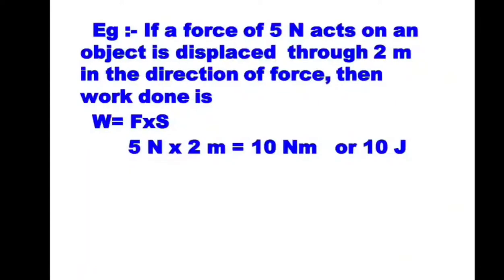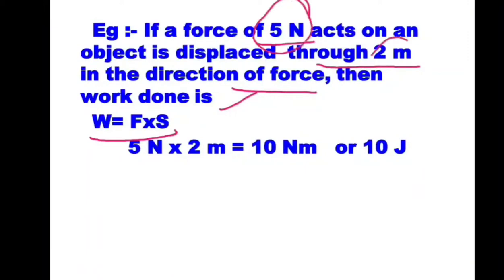Let us take an example and calculate the work done. If a force of 5 Newton acts on an object and it is displaced through a distance of 2 meters in the direction of the force, then the work done will be equal to the product of force and displacement, that is 5 × 2 = 10 Newton meter, or we can say 10 joules.